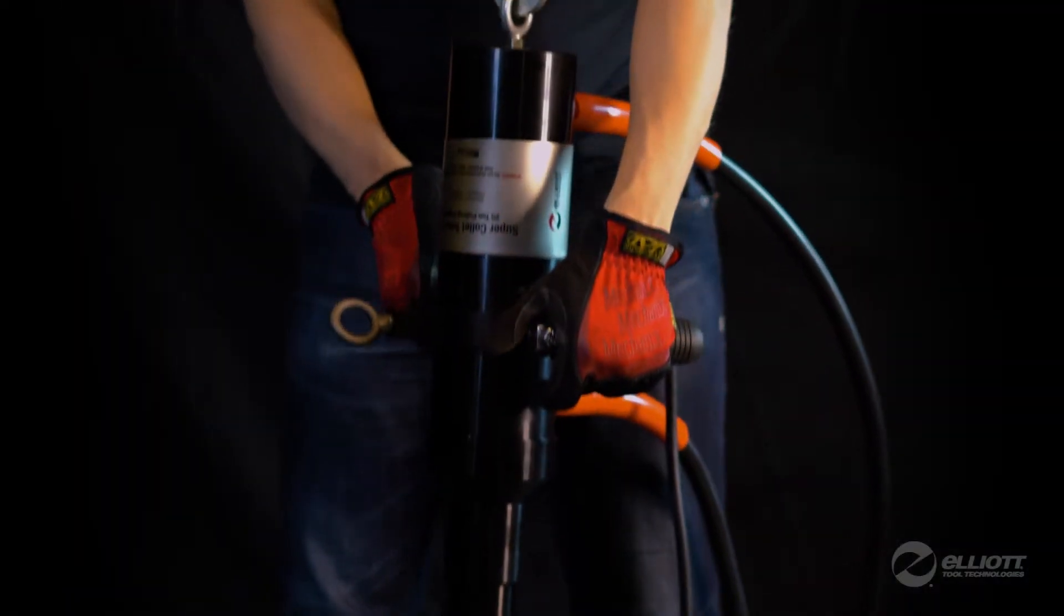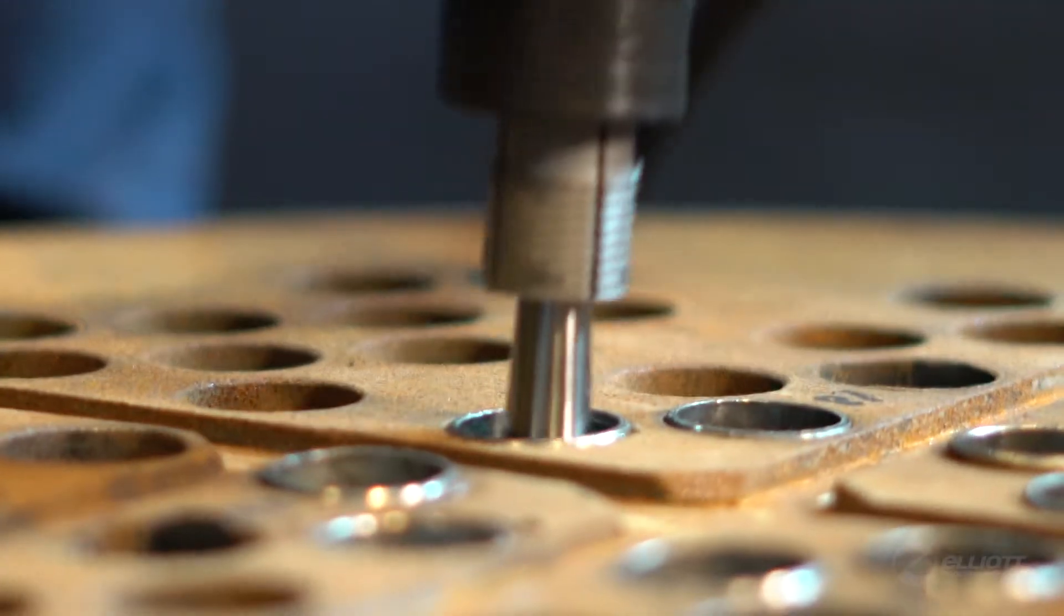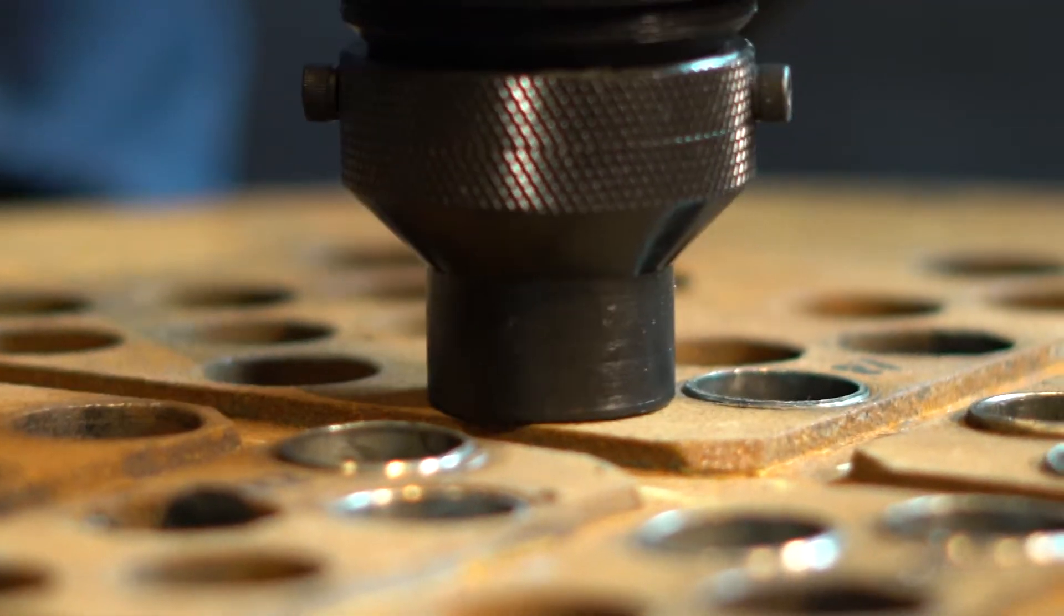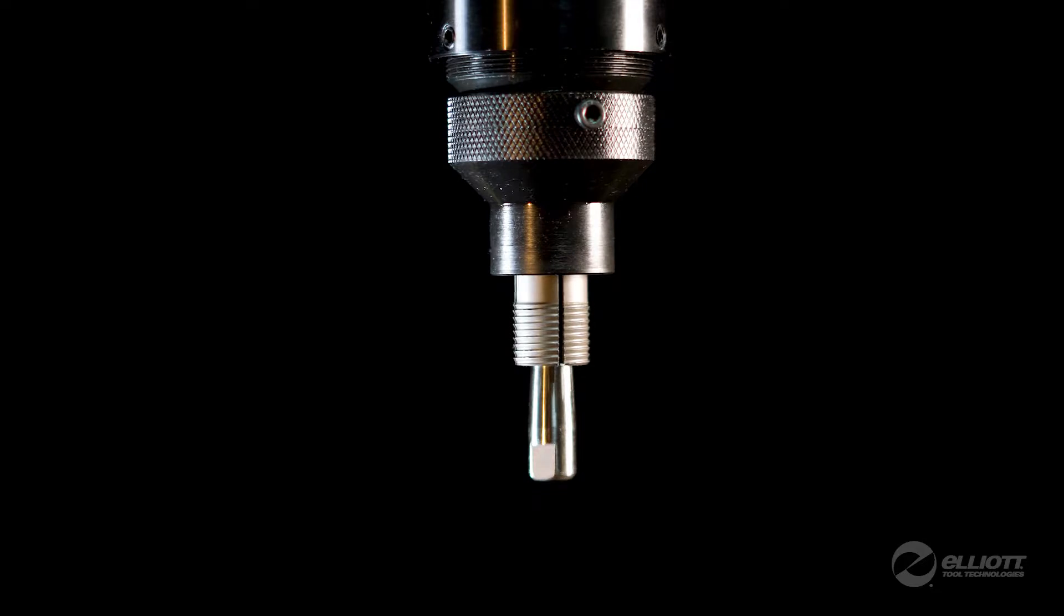Save hours of machine time with a collet-style tube puller. Just insert the collet and let the hydraulic-powered jaws open and bite into the ID of the tube and extract it.